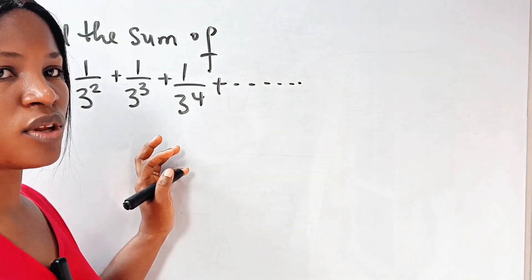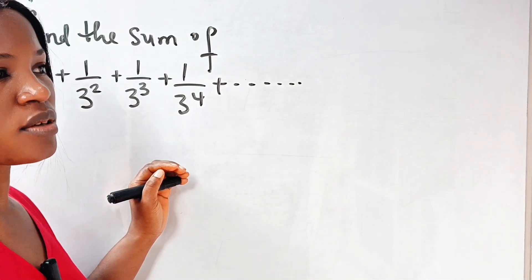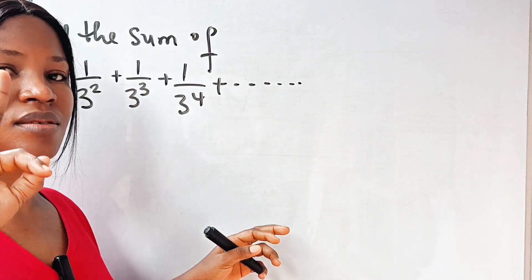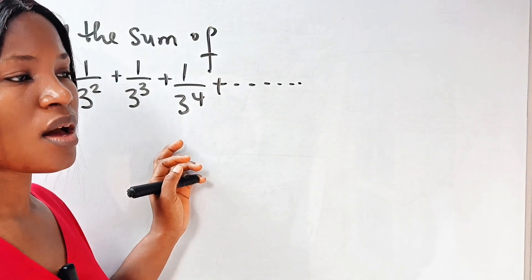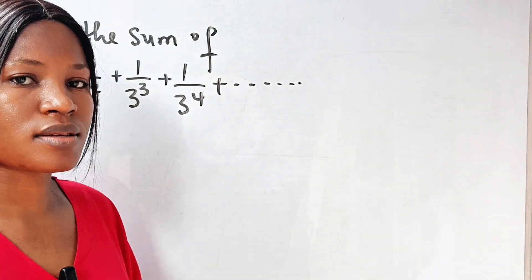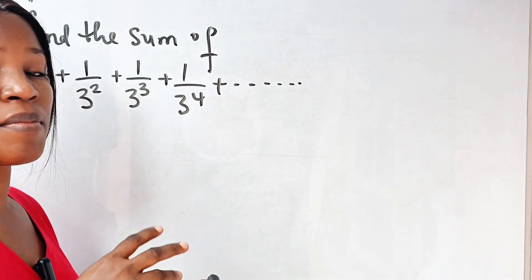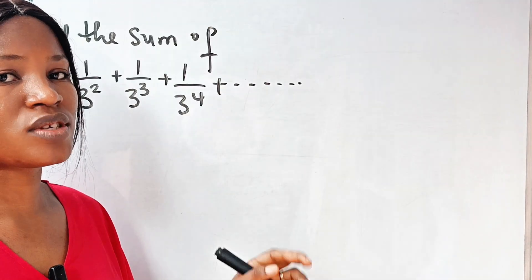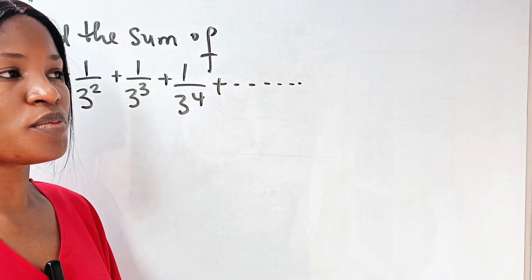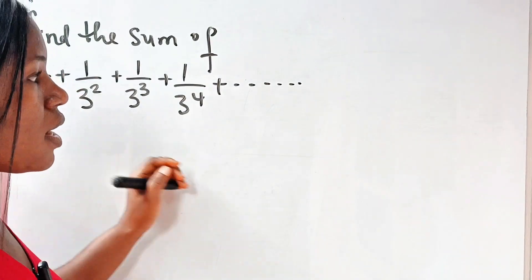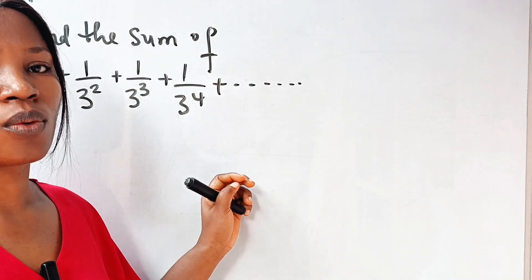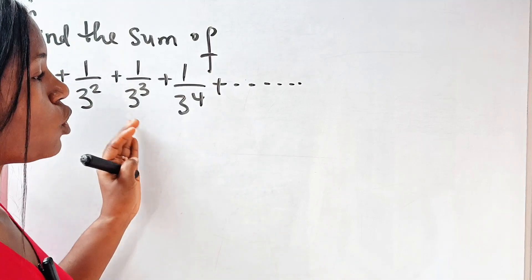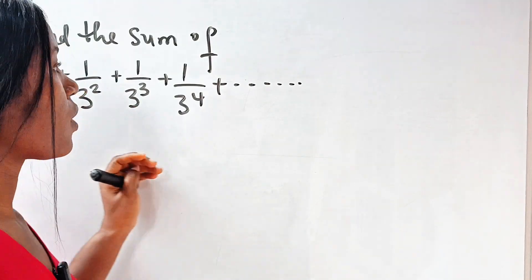Let's solve this math Olympiad question. Welcome back to my channel. I'm going to give you three ways you can solve this and still get the same answer. The last method is going to be the easiest, using a formula. I would like you to watch to the end and see how we use that particular formula instead of going through the stress of solving this.